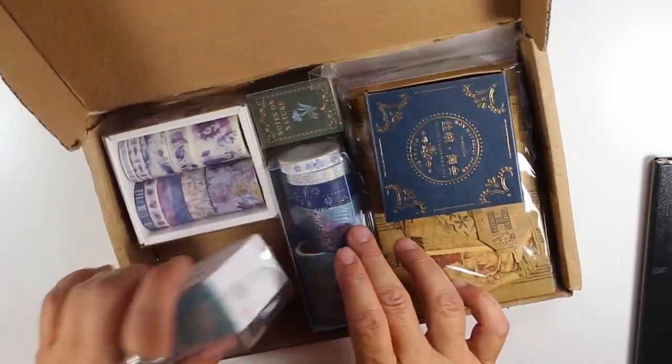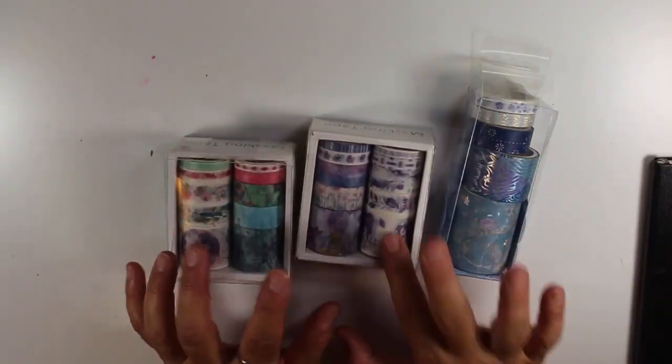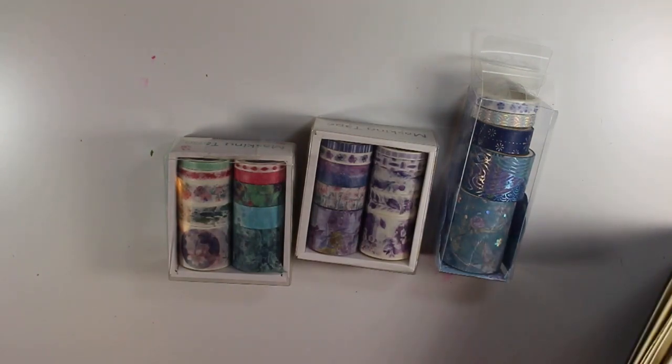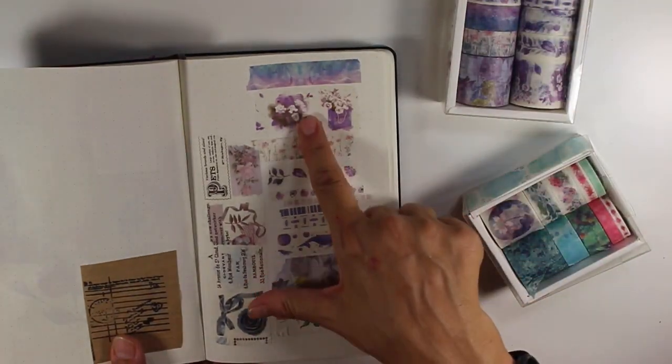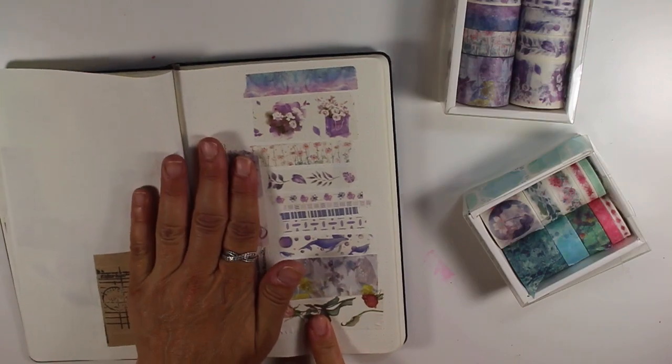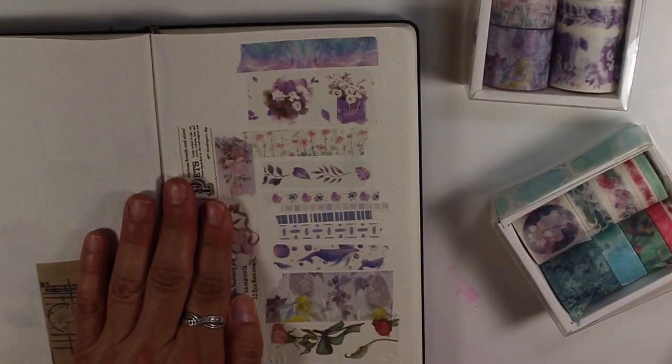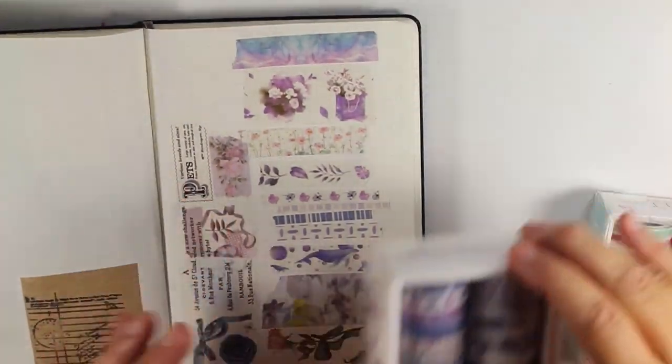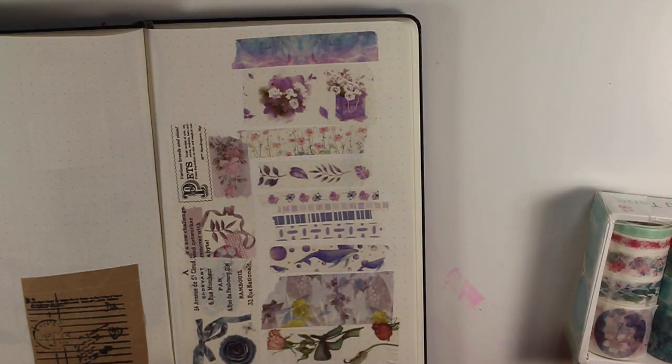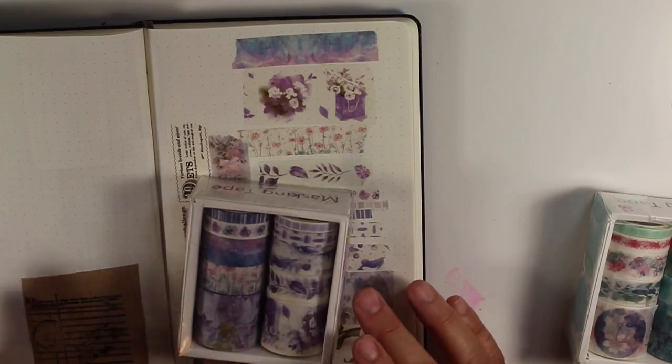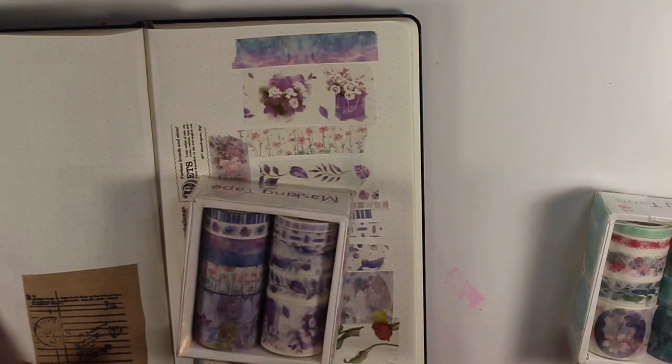Okay, so the first I'll go through is these washi tapes. This one I had bought before, maybe from a different store. I'll show you the swatches of the tape. So on this one, these are the swatches from here to here. Let me zoom in so you can see a little better. There's not a lot on each roll.